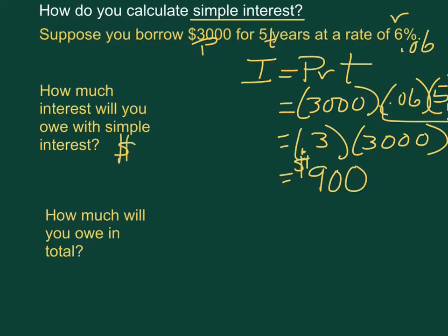So you will owe $900 in interest but you will still have to pay the loan back itself. So it's the $3,000 plus the $900, your principal plus the interest you owe.